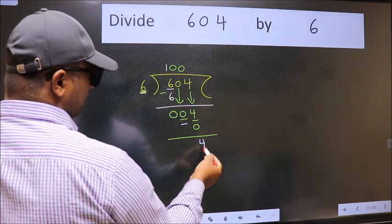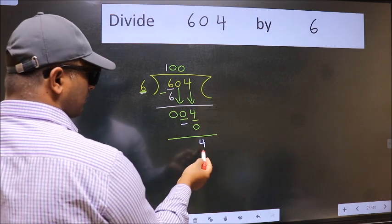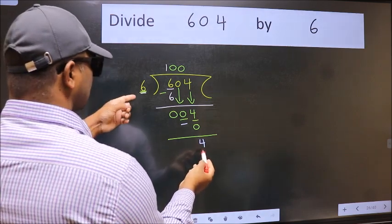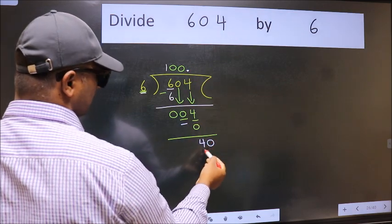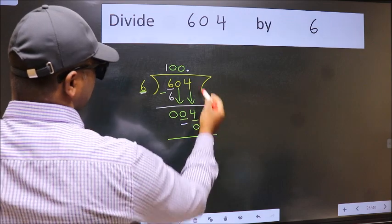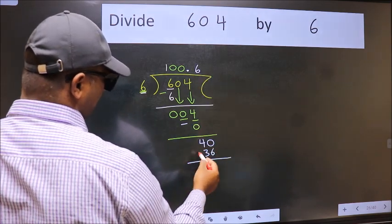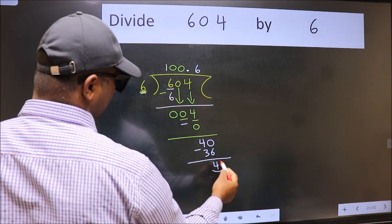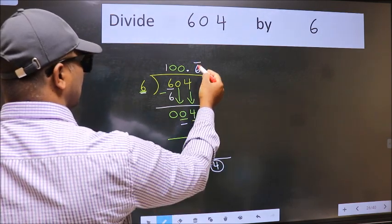Over here, we did not bring any number down. And 4 is smaller than 6. So now we can put dot and take 0. So 40. A number close to 40 in 6 table is 6636. Now we subtract. We got 4 again. That means we get bar on this number.